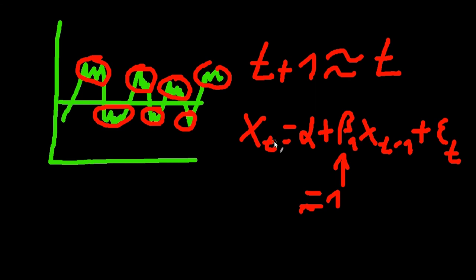If that happens, we would violate one of the major preconditions. So we cannot allow our data to contain a unit root if we don't want to end up doing spurious regression.